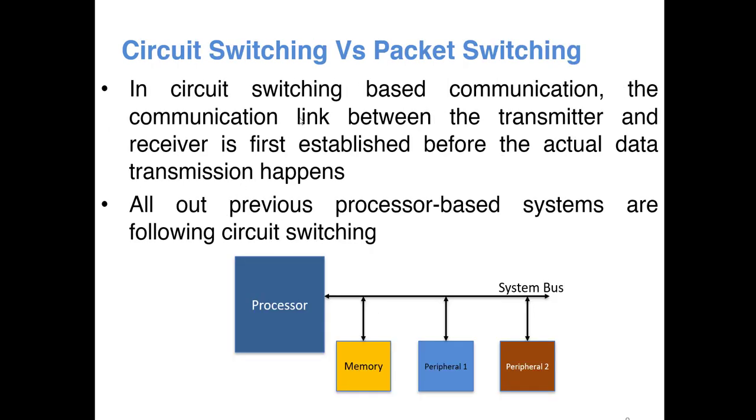Another important thing is circuit switching and packet switching. In circuit switching, what happens is whenever two parties communicate, the communication link is initially established. They are either permanently established or temporarily established. Only after establishing the link, the actual data transmission happens. So all the processor based systems that we discussed before, they all come under circuit based switching because there is a permanent connection between the processor and the peripheral, and the data communication always happens through this established link.